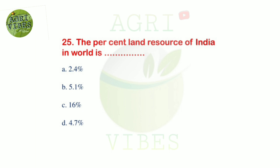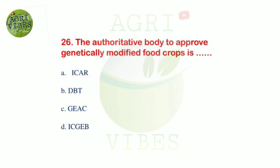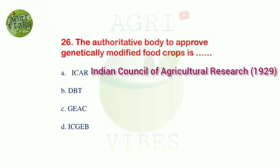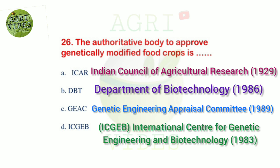Next question: the percent land resource of India in the world is — options: 2.4 percent, 5.1 percent, 16 percent, and 4.7 percent. Correct answer is 2.4 percent. Next question: the authoritative body to approve genetically modified food crops is — options: ICAR, DBT, GEAC, and ICGEB. Correct answer is GEAC.